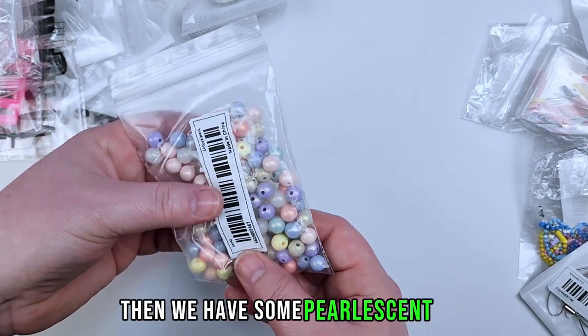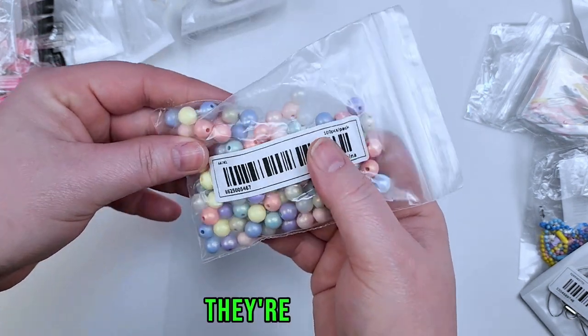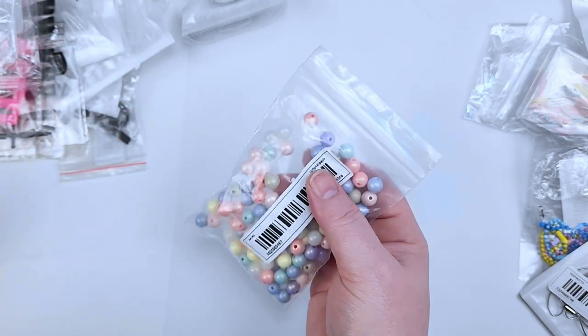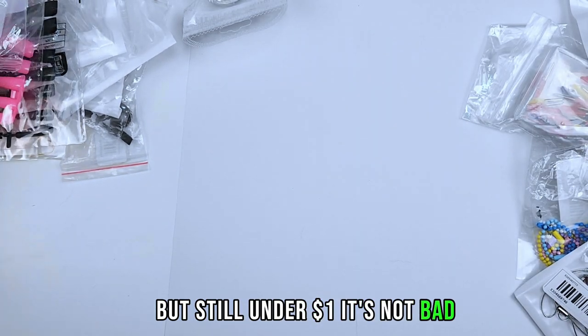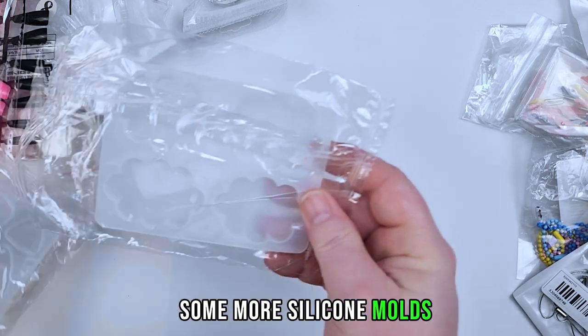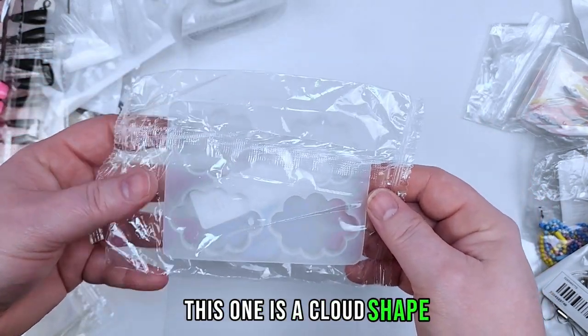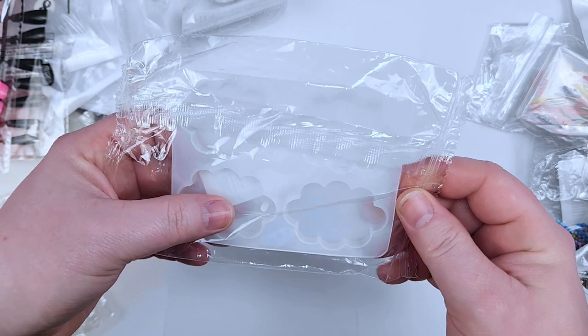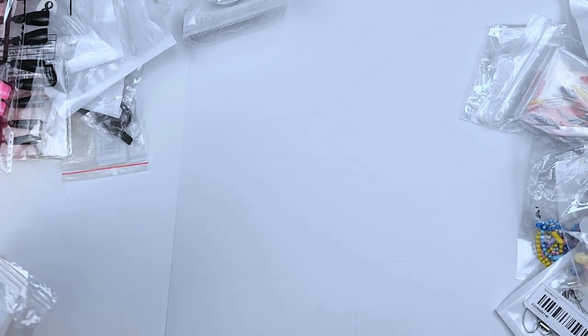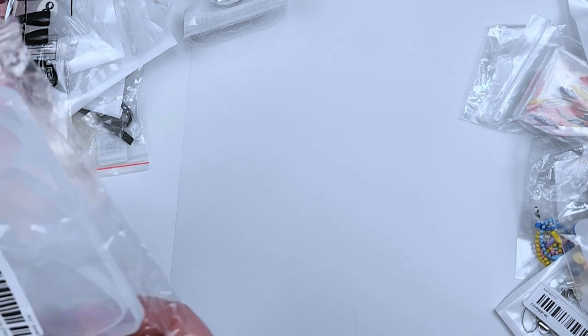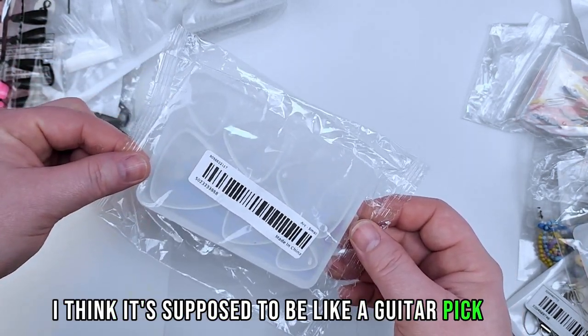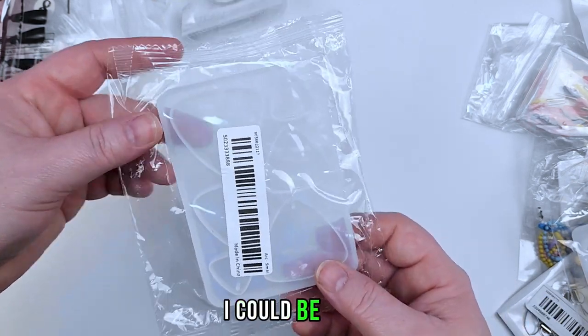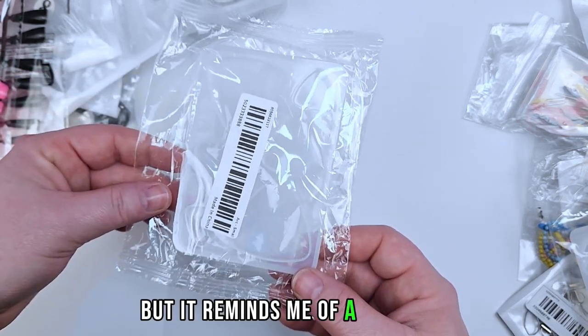Then we have some pearlescent beads. They're a decent size. You don't get a whole lot of beads for the price but still under a dollar it's not bad. Some more silicone molds. This one is a cloud shape and it already has the hole so that's really nice. You don't have to drill anything. I don't know what this one's supposed to be, I think it's supposed to be like a guitar pick almost. They're supposed to be like earrings.